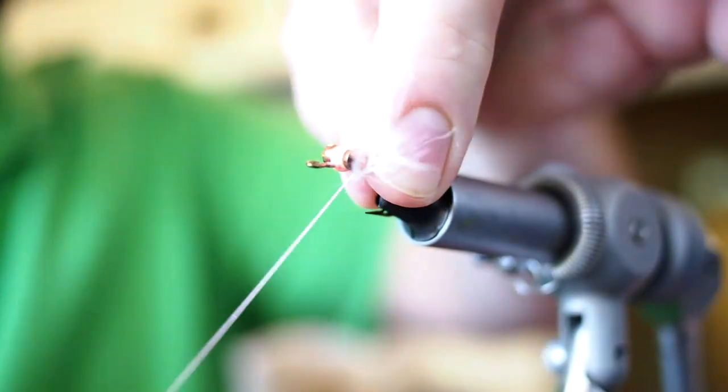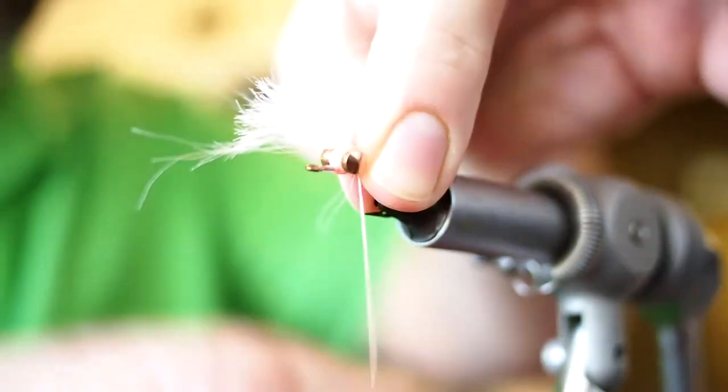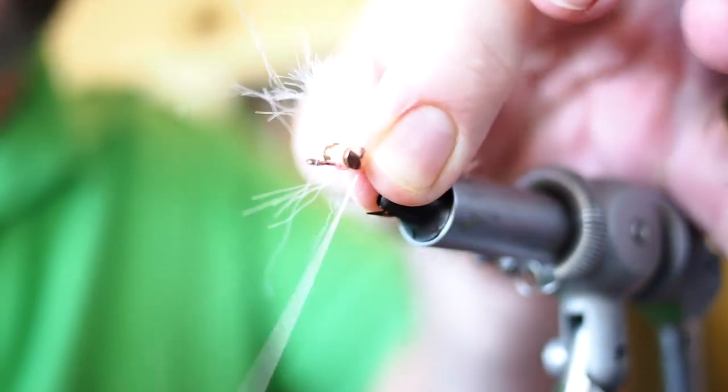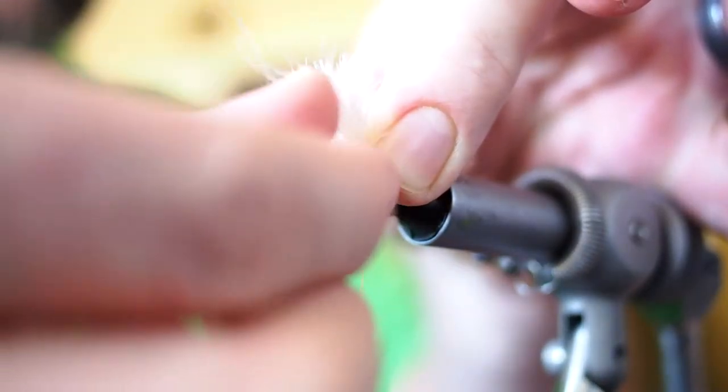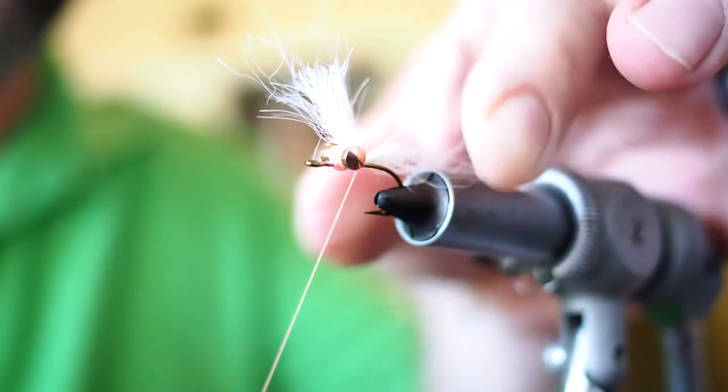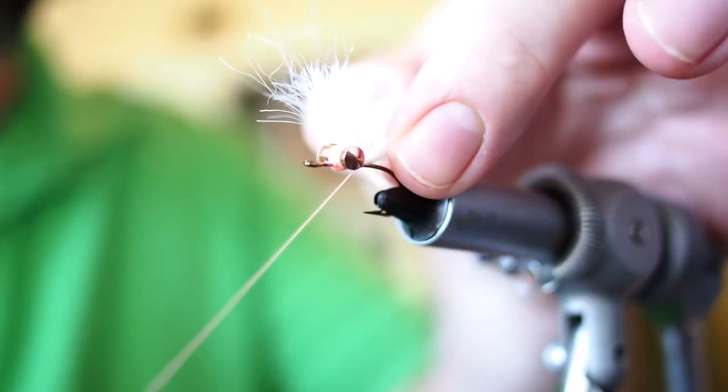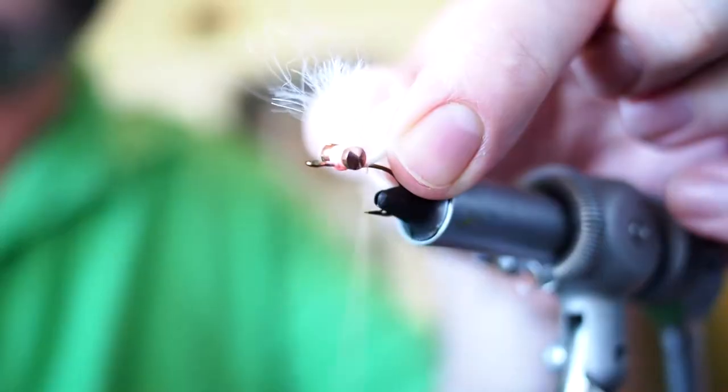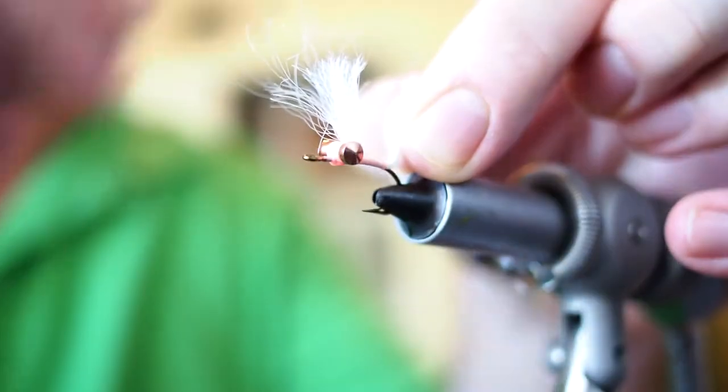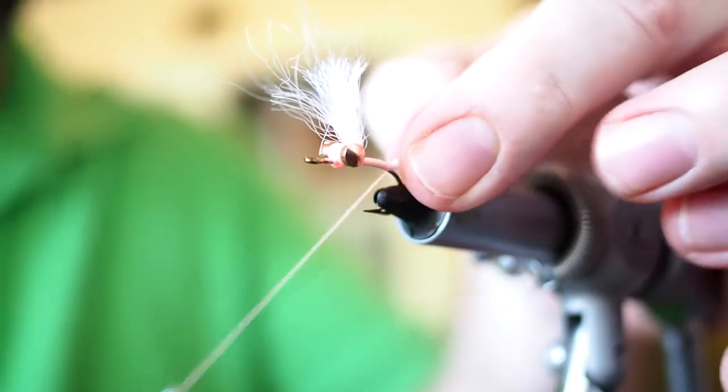You basically want it to be about as long as the shank of the hook. We're going to tie that on to the top of the hook. Cinch it on there, get it all to stay up top. Then slightly lift the tail as you advance your thread to the rear of the hook. That will help keep the material on the top of the hook. We're going to extend our thread back to about the barb.